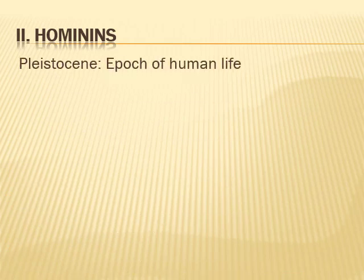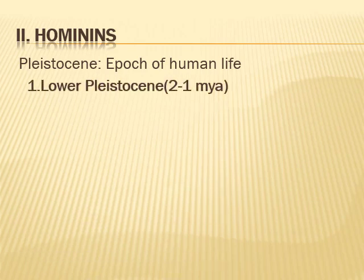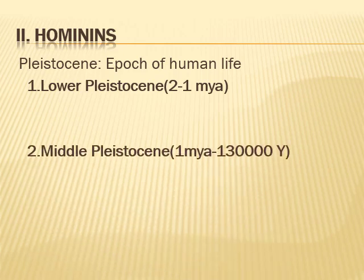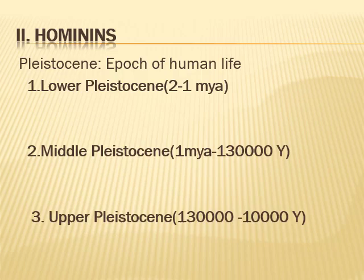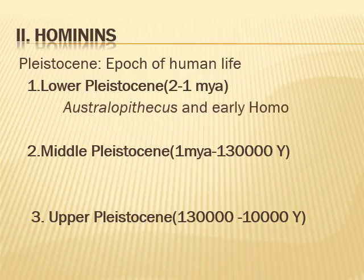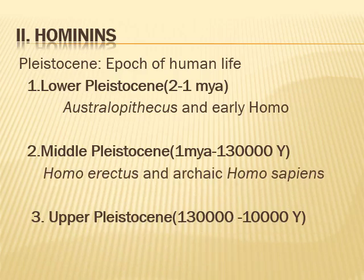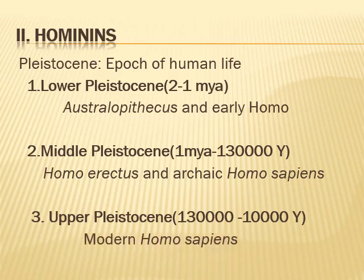Hominins include humans, their relatives, and their ancestors. They emerged during the Pleistocene, which is also called the epoch of human life. Pleistocene is divided into three time periods: Lower Pleistocene, ranging from 2 to 1 million years ago, during which Australopithecus and early Homo were prominent; Middle Pleistocene, when Homo erectus and archaic Homo sapiens existed, from 1 million to 130,000 years ago; and Upper Pleistocene, when modern Homo sapiens evolved from about 130,000 to 10,000 years ago.